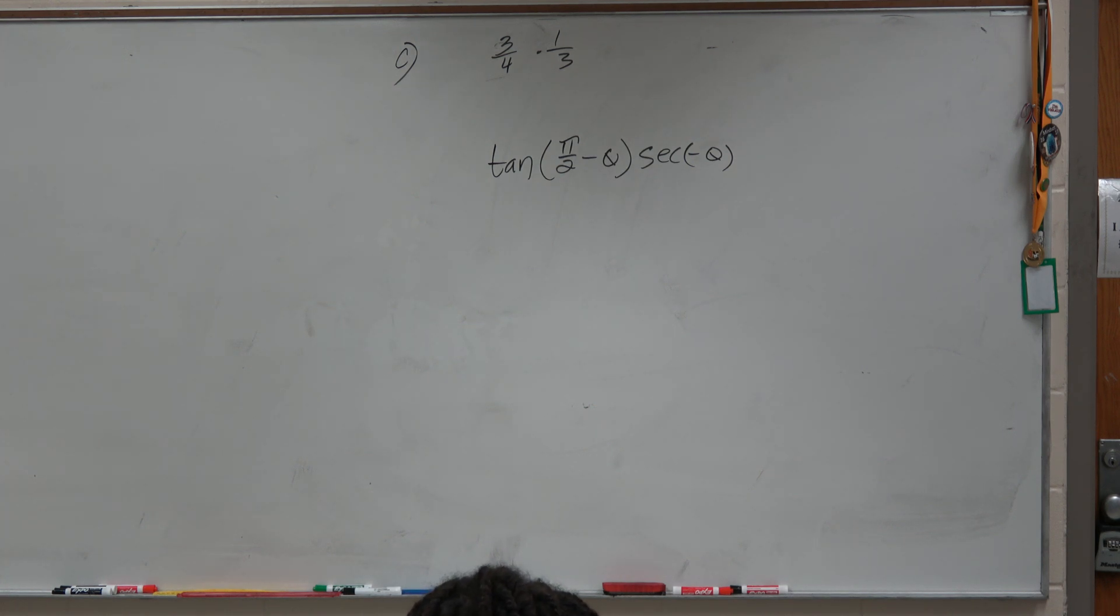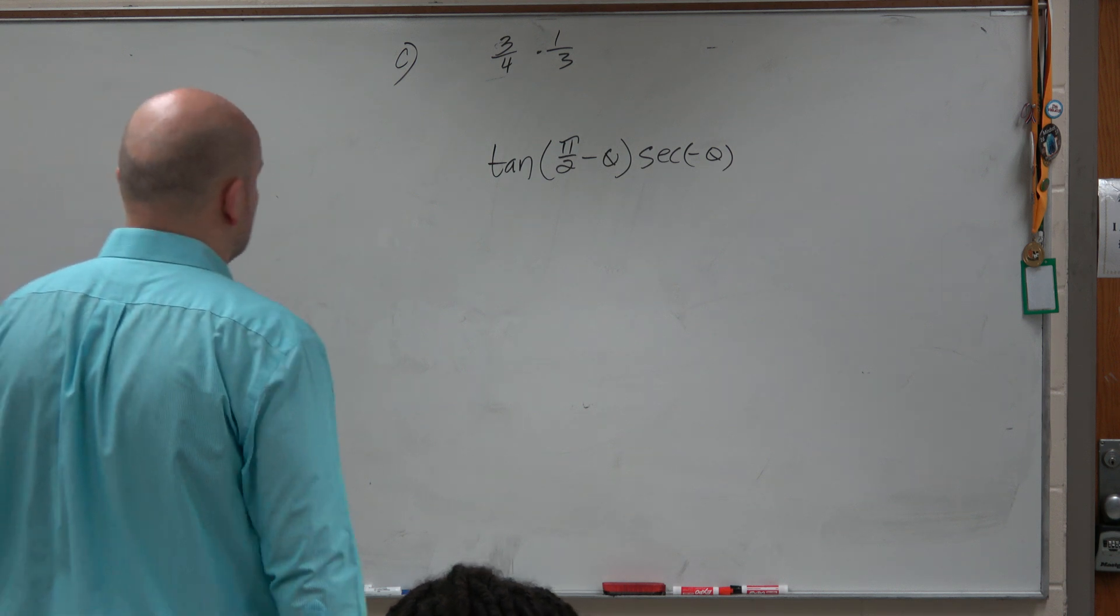So in a problem over here, we have tangent of pi halves minus theta times secant of negative theta.